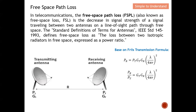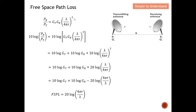I shift Pt over to the left — this gives the equation for free space path loss. The next step is to apply 10 log on both sides. On the right-hand side, I expand the equation. Since all terms are multiplied, they become a sum of log terms: 10 log Gt, plus 10 log Gr, plus 20 log of lambda over 4 pi r, where r is the distance between the transmitter and receiver antenna.